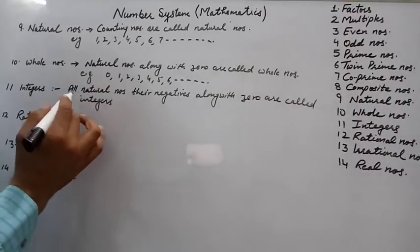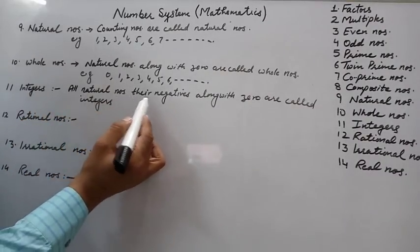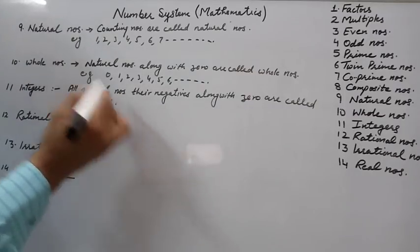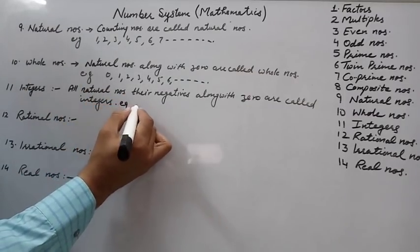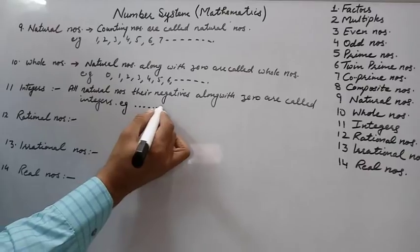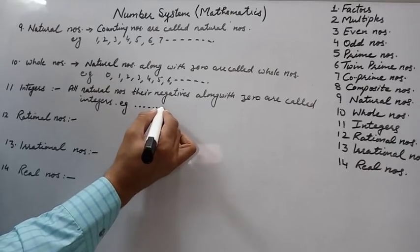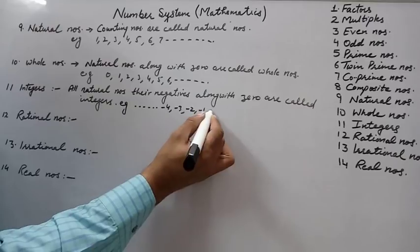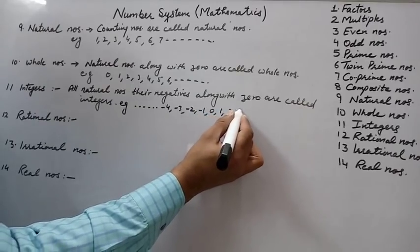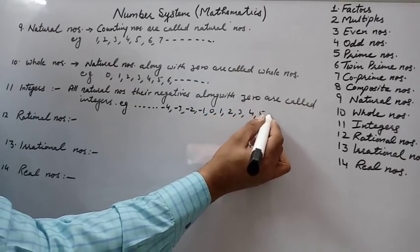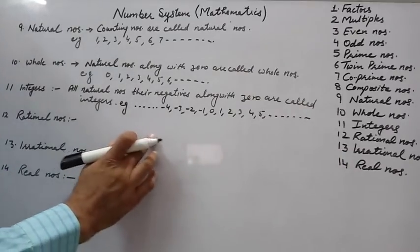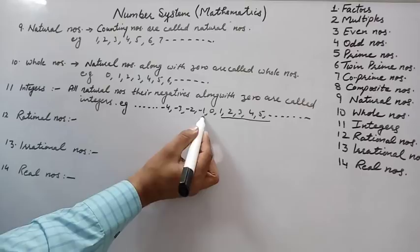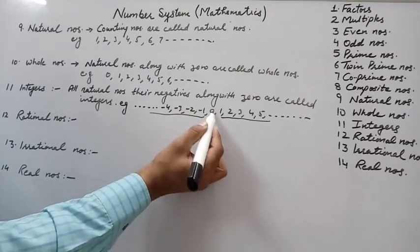Integers include all natural numbers, their negatives, and zero. For example: ..., -4, -3, -2, -1, 0, 1, 2, 3, 4, 5, and so on. All natural numbers, their negatives, along with zero are called integers.